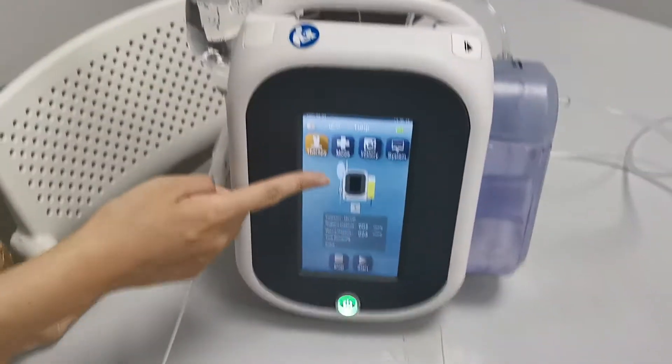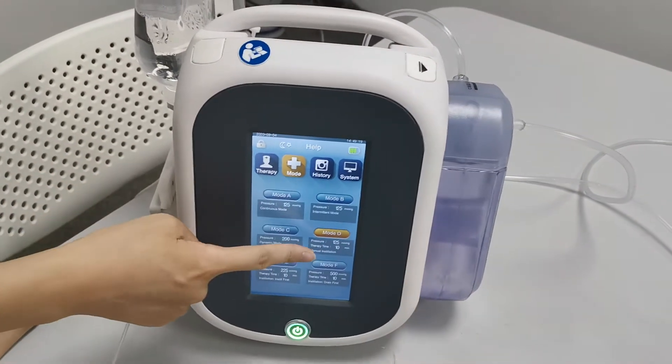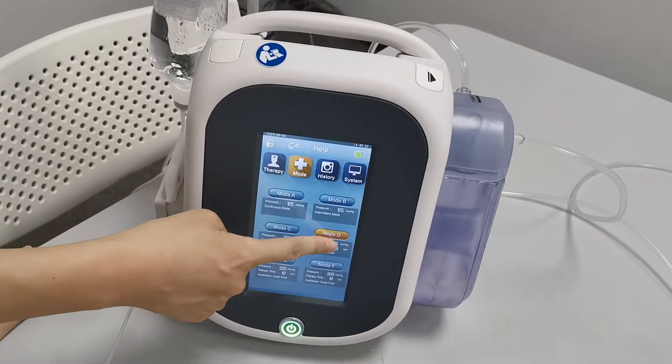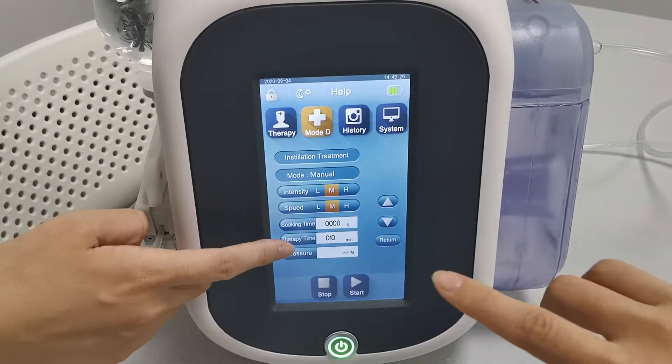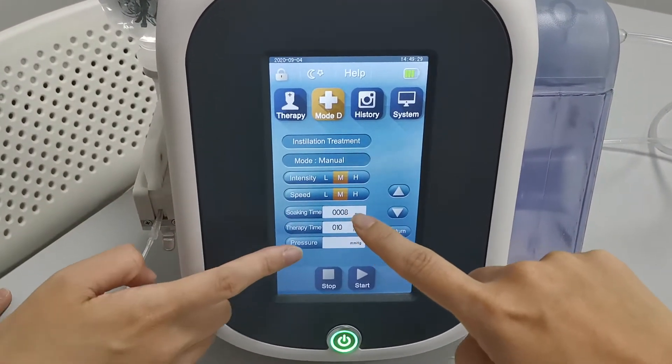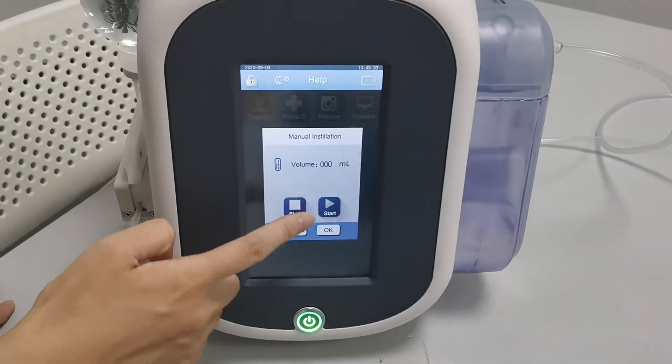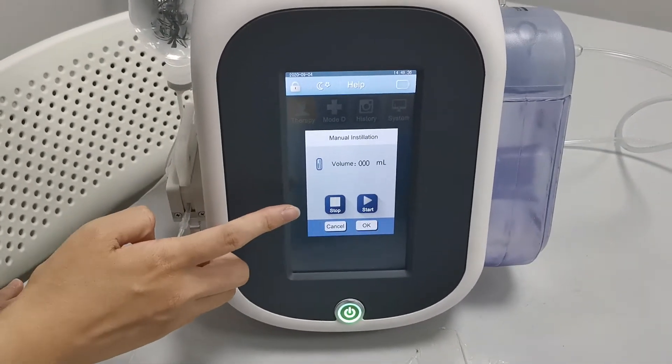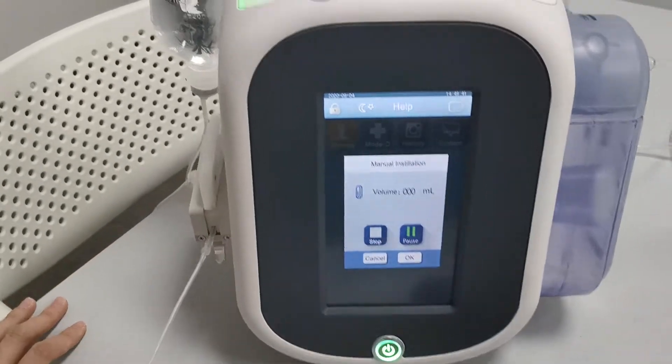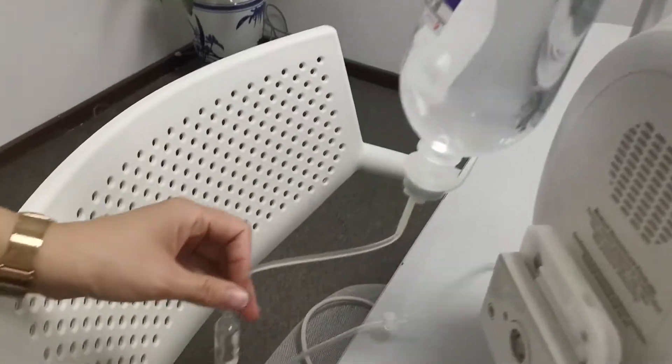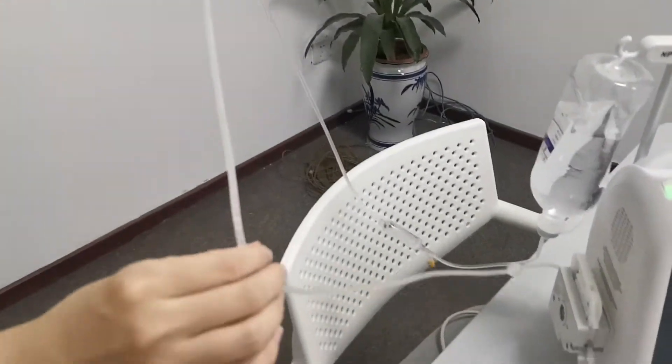And now we're going to show you the installation function. So go to the mode and then go to mode D. So it's a manual mode. Now you can see that just choose the soaking time, therapy time, and then the pressure. So let's press start. In manual mode, you need to watch the volume of the saline. So when you press start, you can see the liquid, the saline will go through this tube.